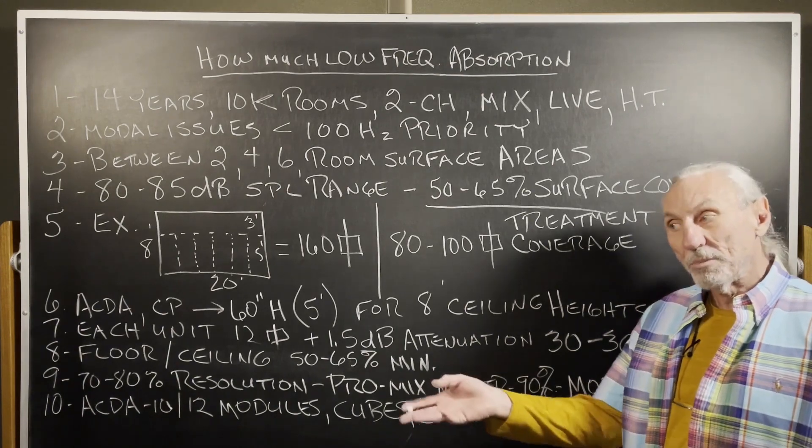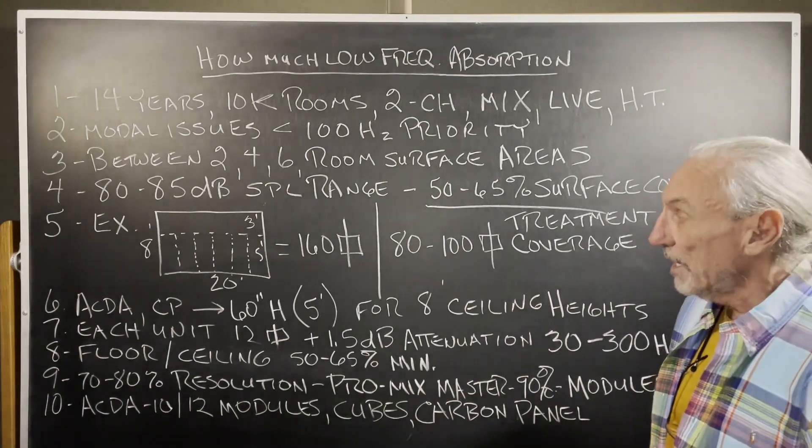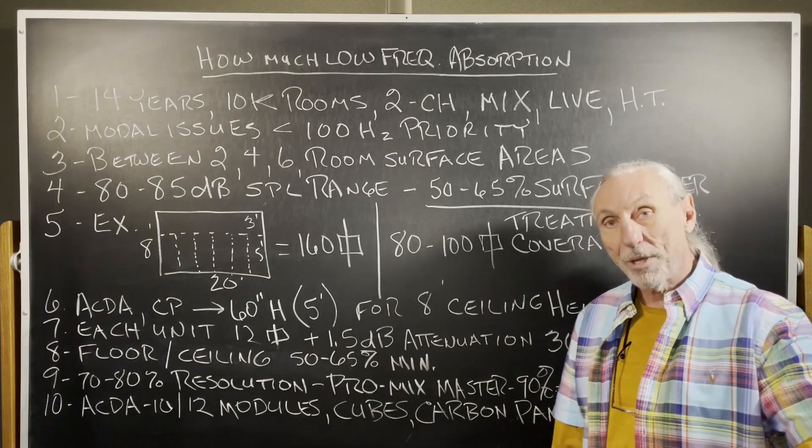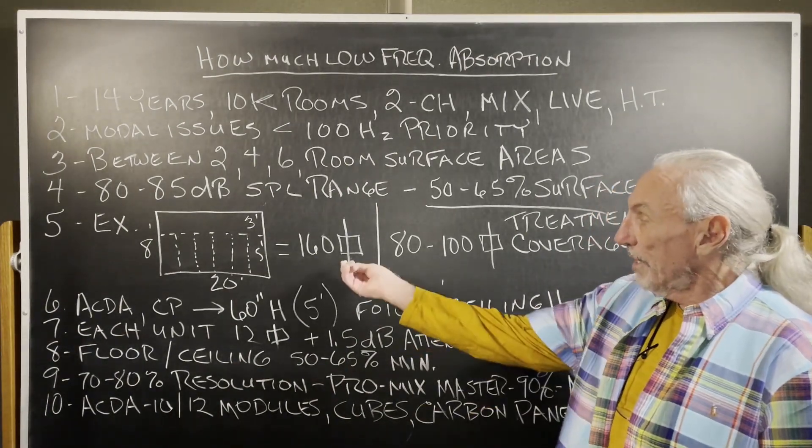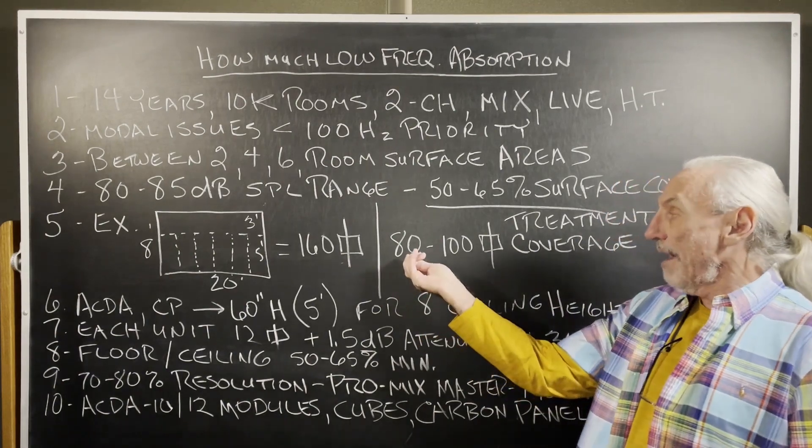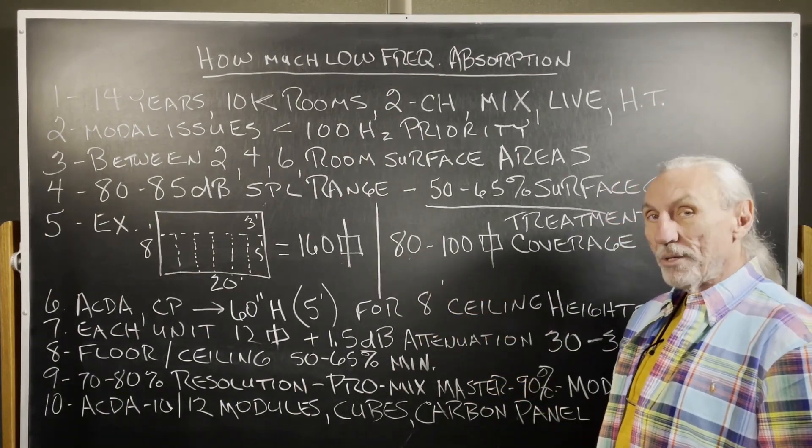We also have our CAW system. You can build it into the walls, get it out of the way. You don't have a lot of refrigerator style boxes sitting around. We get it. So 160 square feet, half of that, 80 to 100.